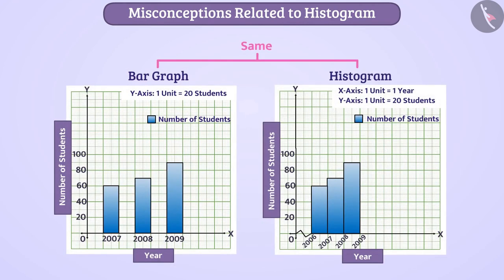If they are asked to represent some information in a histogram, they make a bar graph. It is a misconception to think that bar graphs and histograms are same. Let's understand this.